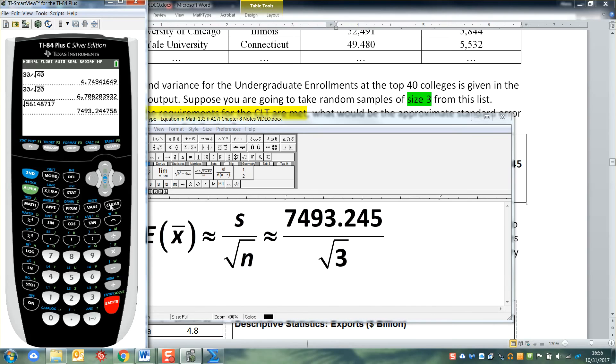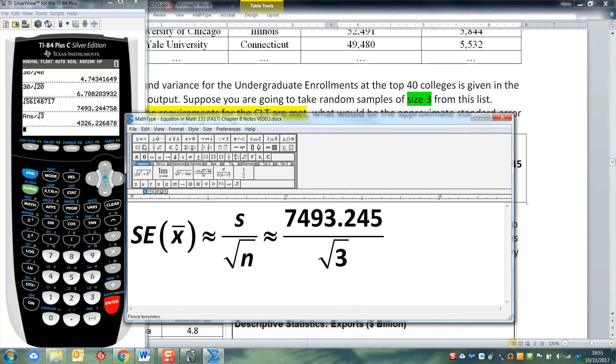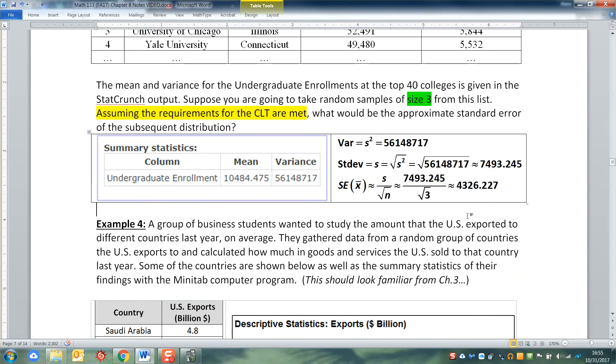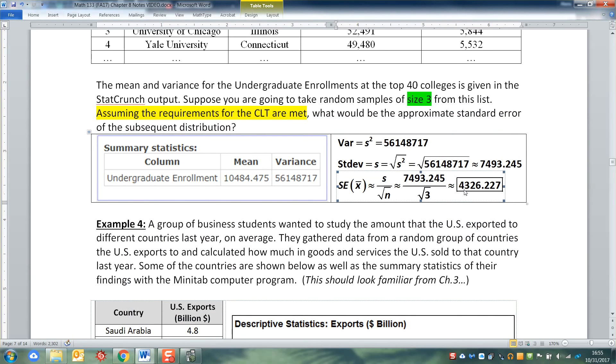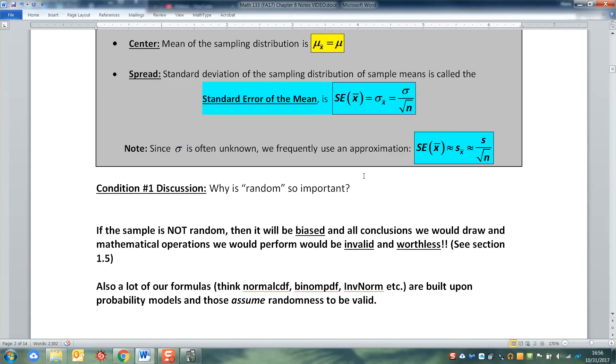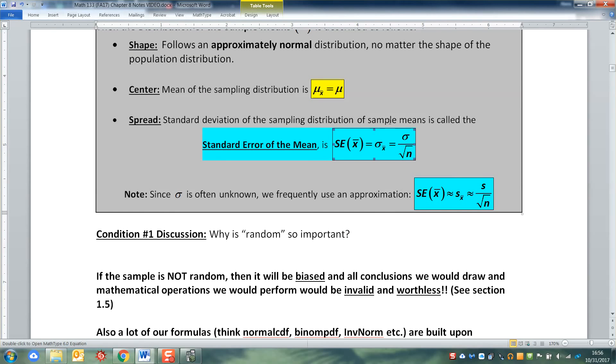So take that number, that answer, and divide it by the square root of 3, and I'll have an answer that is 4326.227. And that is my standard error. I should give that a little box because that's the final result. And I just scrolled back real quickly to show you the formula so you know what I'm talking about. Standard error is technically σ over the square root of n, but we often have to use the approximation s over the square root of n if σ is unavailable to us, which it was in this case, because we don't know the population standard deviation for undergraduate enrollments for all colleges. We only know it for the sample of colleges that we're looking at.